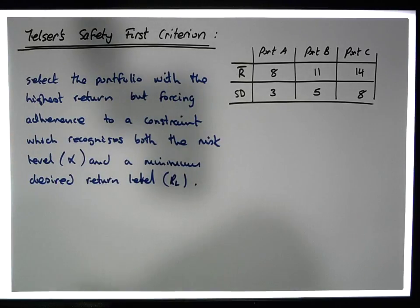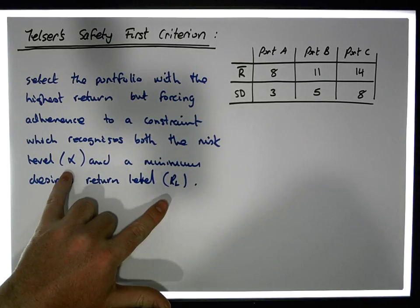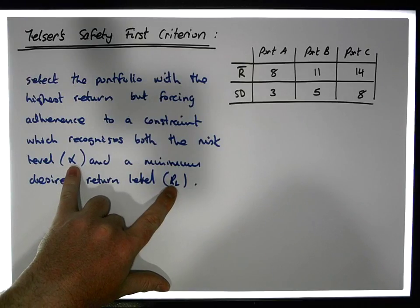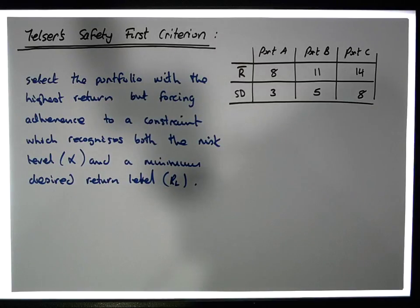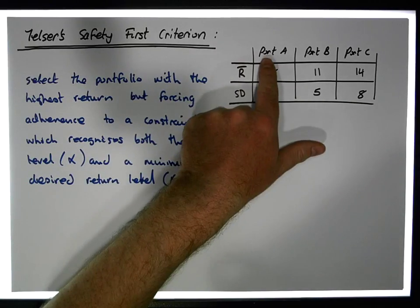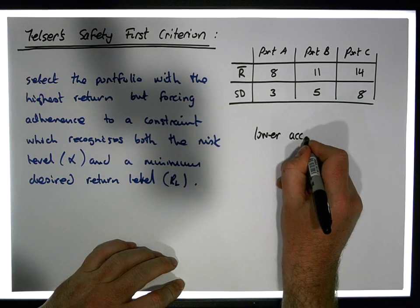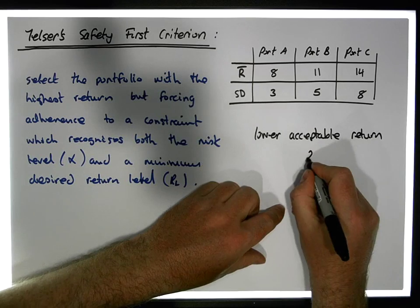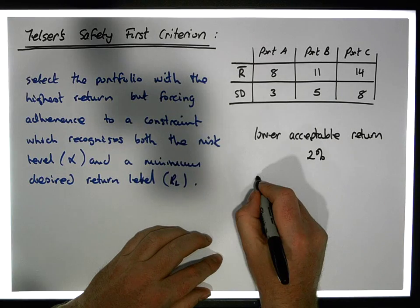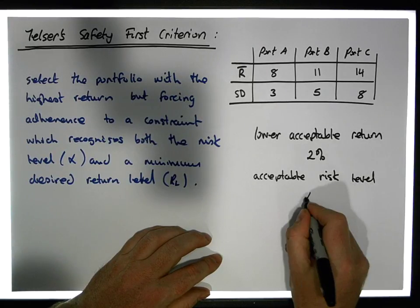We're going to be given RL and we're going to be given alpha, and basically what we need to figure out is the expected return for a portfolio. Let's say we have a question here: which portfolio should we choose based on Telser's criterion where the lower acceptable return is 2% and the acceptable risk level alpha is equal to 10% or 0.10?